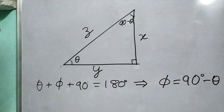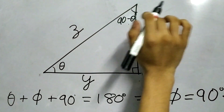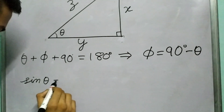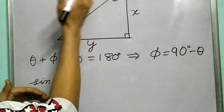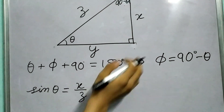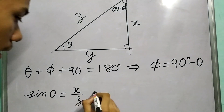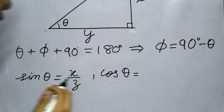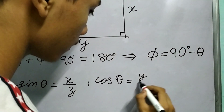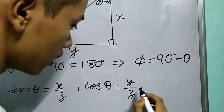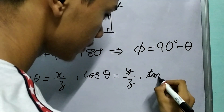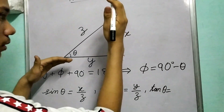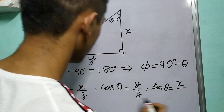Now let us consider the trigonometric ratios of theta and of phi, which is 90 minus theta. First, sine theta equals x upon z. Cos theta equals base upon hypotenuse, which is y upon z. Similarly, tan theta equals perpendicular by base, so x upon y.